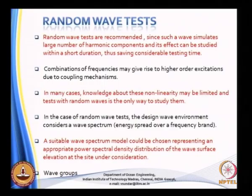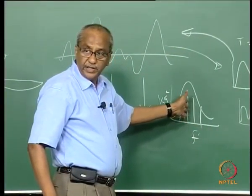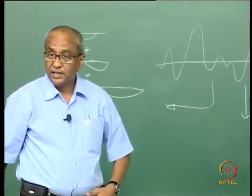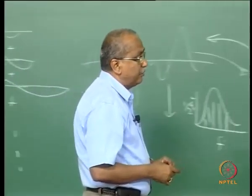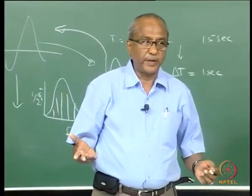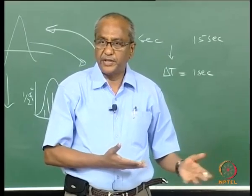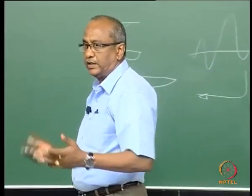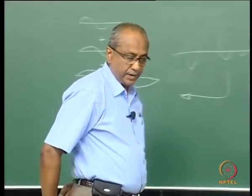In a random wave test, the design environment is described by a spectrum rather than just wave height and period. Standard spectra such as JONSWAP, Bretschneider, or Scott can be chosen to represent the appropriate power spectral density function for the site. A suitable spectrum model is chosen depending on the location being studied.